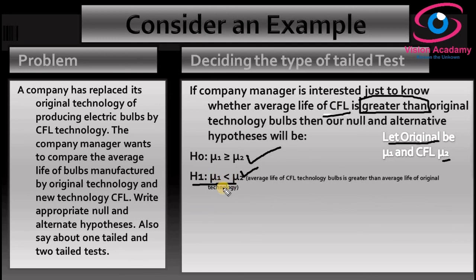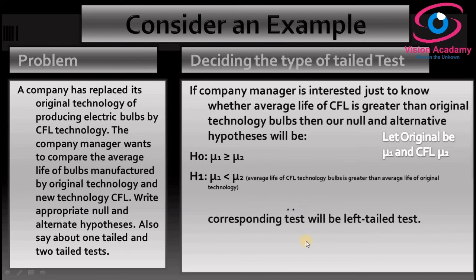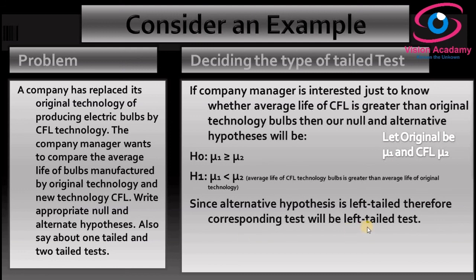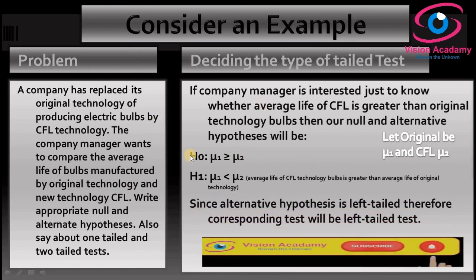We concentrate on the alternative hypothesis to decide the type of tailed test. The alternative hypothesis indicates a 'lesser than' type, meaning the average life of CFL technology bulbs is greater than the average life of original technology bulbs. Since the symbol is 'lesser than,' the rejection region falls in the left side of the sampling distribution. Therefore, it is a left-tailed test. This is how you decide the type of tailed test. Thank you for watching — please subscribe to my Vision Academy YouTube channel and practice these problems.